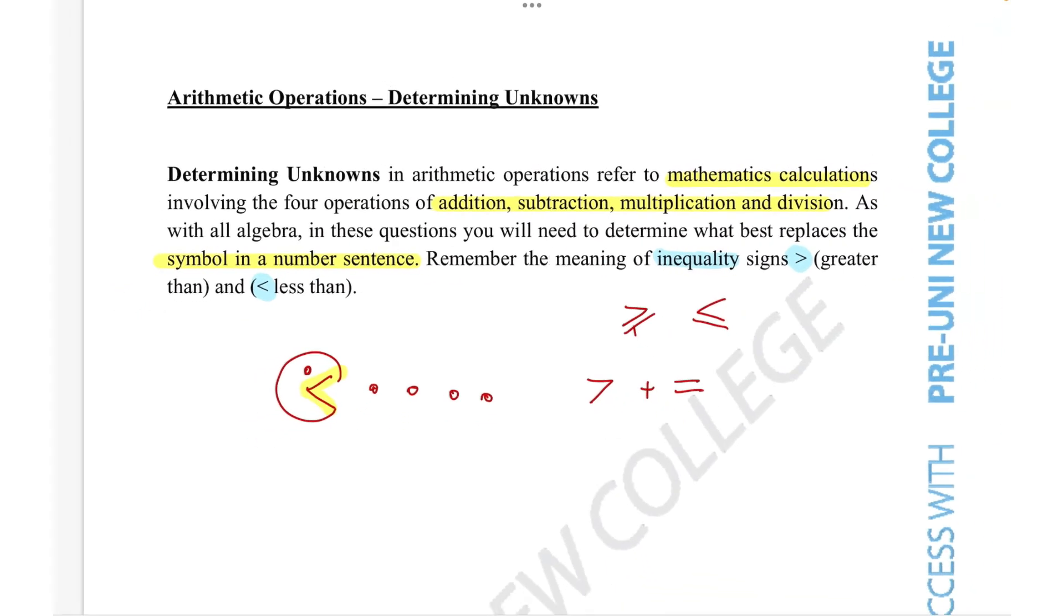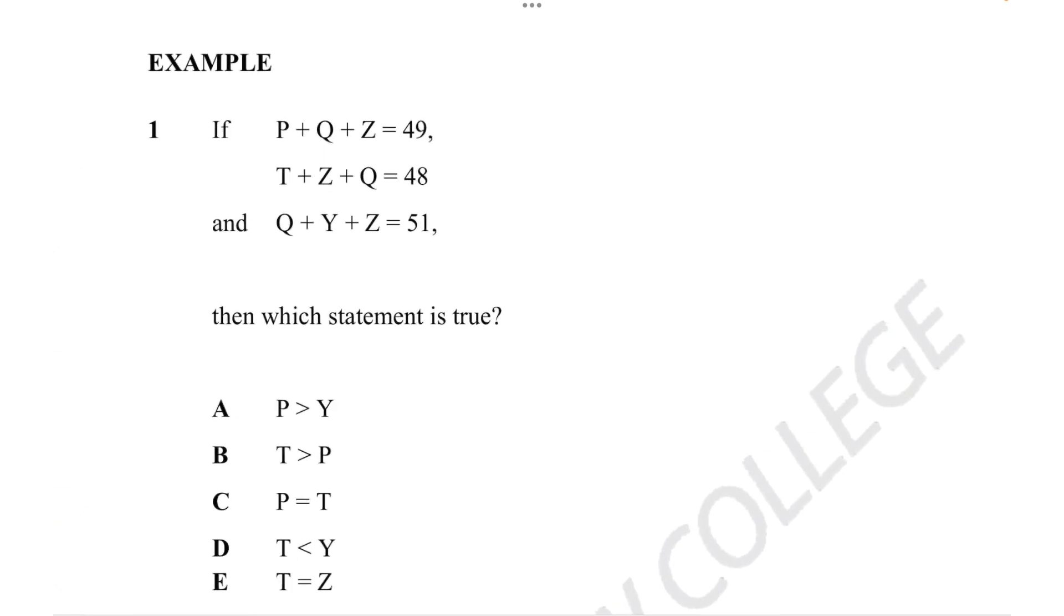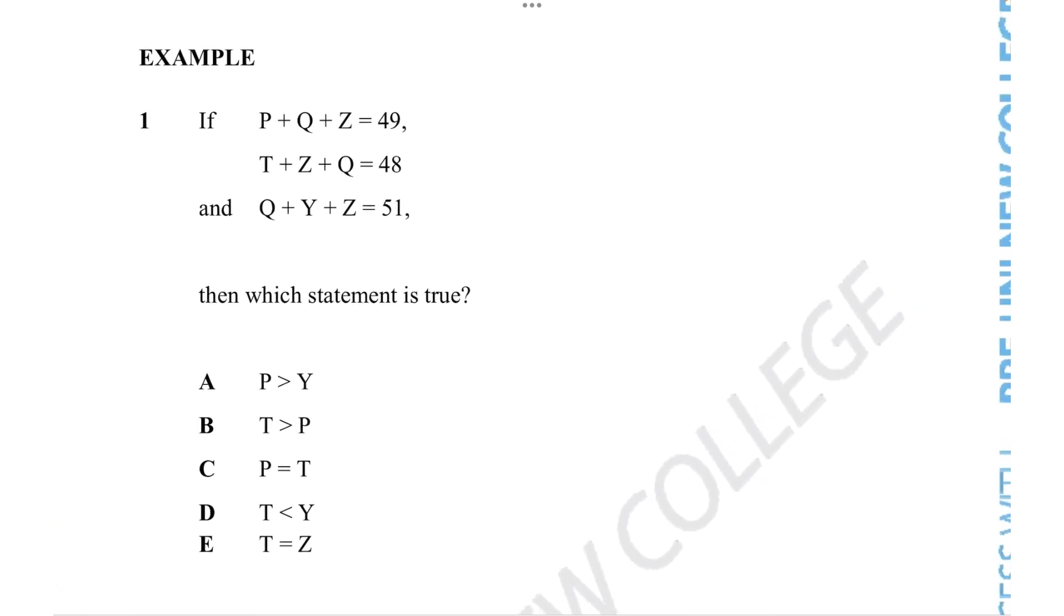Now that we've understood the fundamental concepts of what belongs in these types of questions, we're going to take a look at a quick example. In this particular question, we're given a series of equations. In these three equations, we're told that a different combination of letters is equal to three different numbers, and we want to figure out which of these below statements are true, and that's where we see those inequality signs come into play.